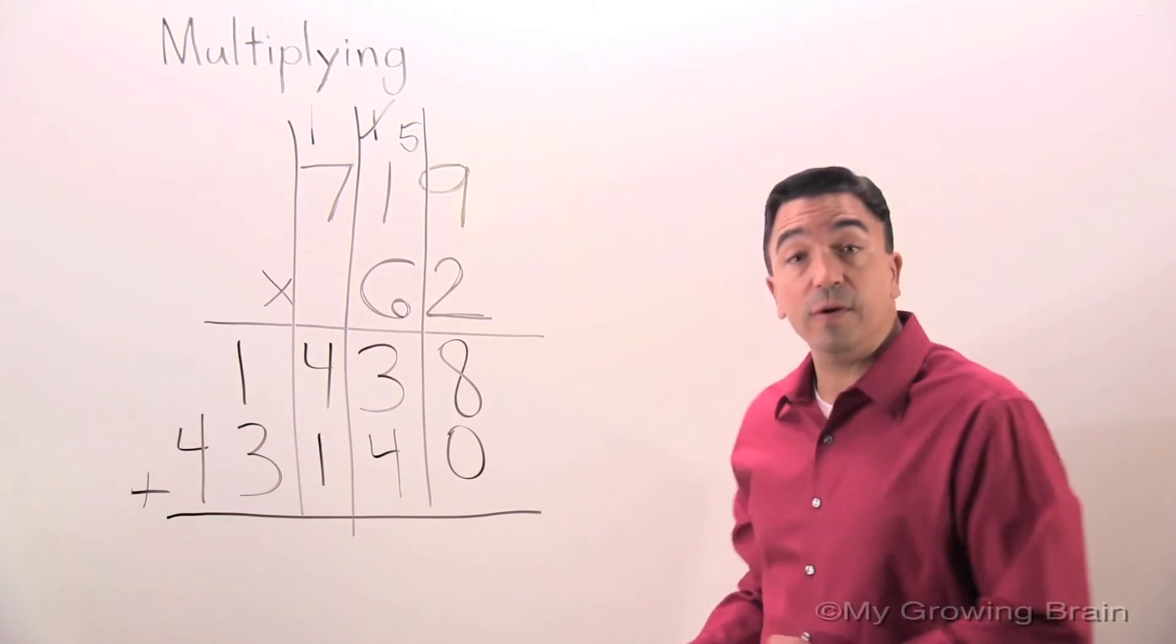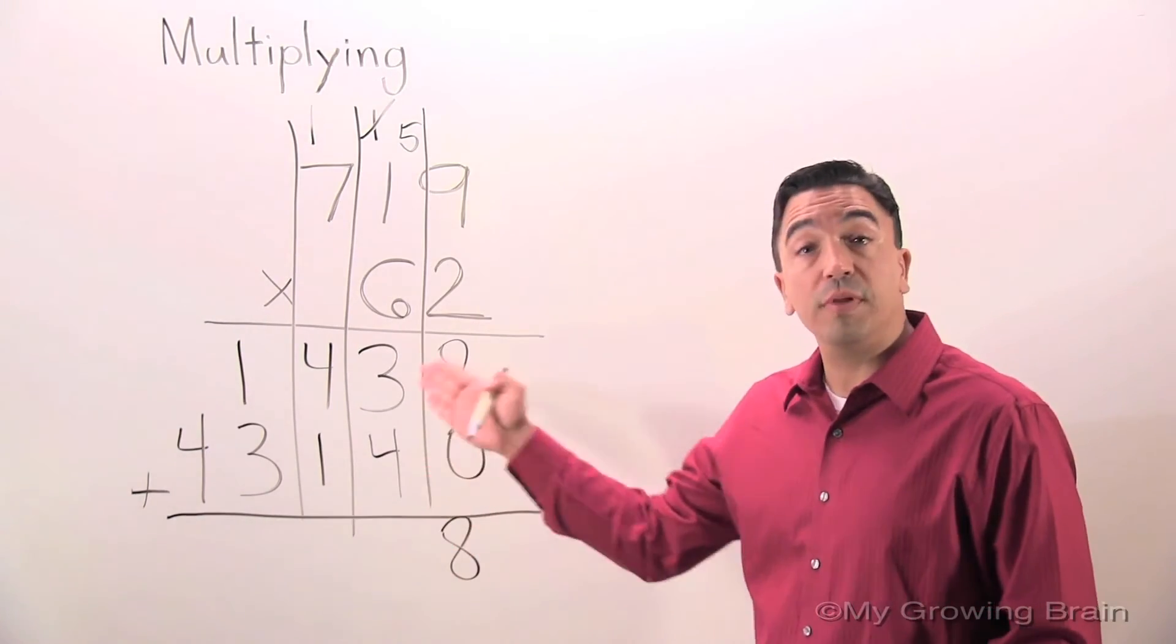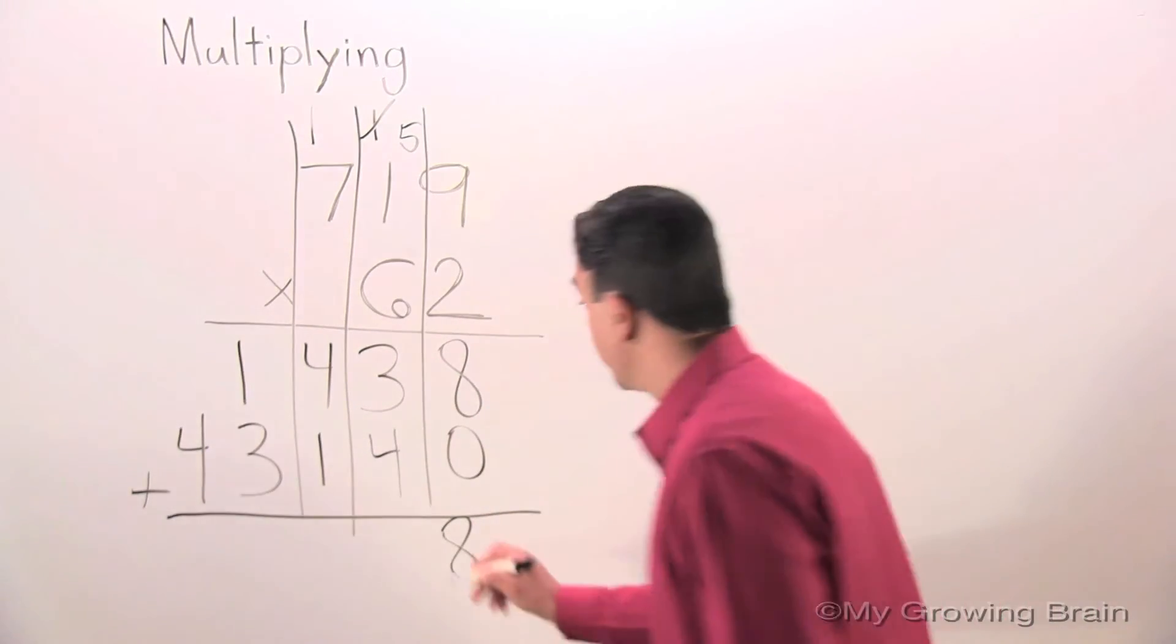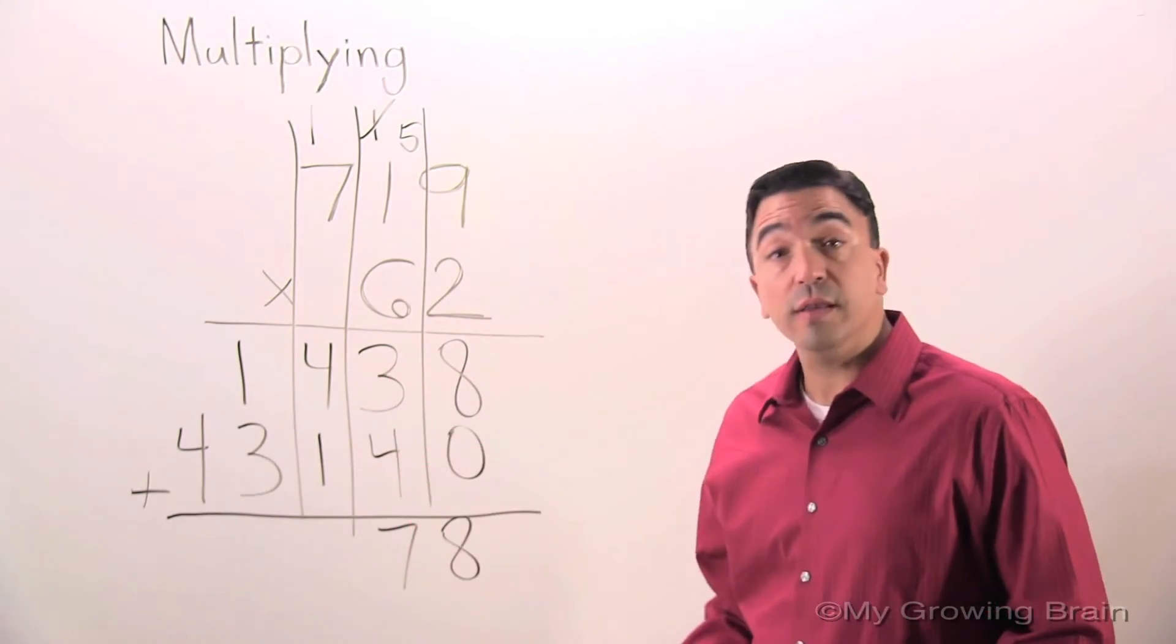Eight plus zero is eight. Four plus three, seven. Four plus one, five.